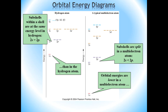Another difference is that where you have different subshells within the same shell, their energies are different as well. For example, in the hydrogen atom the 2s subshell is equal in energy to the 2p subshell. But in a multi-electron atom, the 2s sublevel is lower in energy than the 2p sublevel. A similar pattern holds for the third shell: 3s is lower than 3p, which is lower than 3d, and so on.